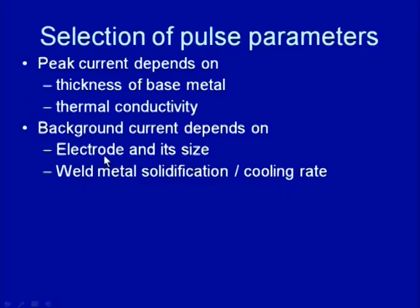The background current selection depends upon the electrode size and composition. Electrodes like thorium-coated or zirconium-coated electrodes can work even with a low level of current, while pure tungsten electrodes require higher base current. Electrodes of larger size require higher base current than fine or small diameter electrodes. Sharp-tipped electrodes can work with lower base current than large-diameter or large-tipped electrodes.